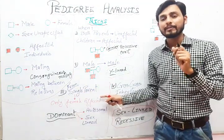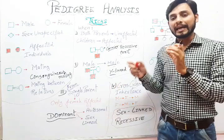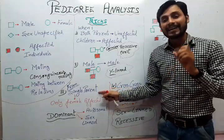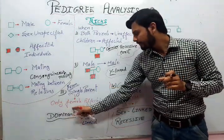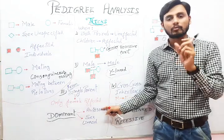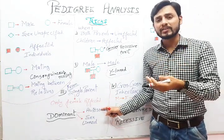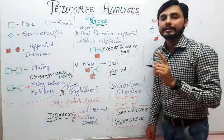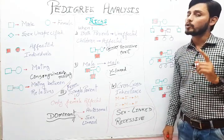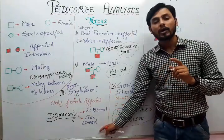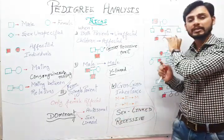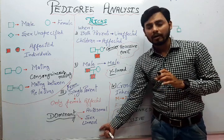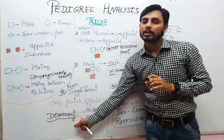The third trick: when either parent is affected and in the next generation only the female child is affected, then the particular trait will be a dominant character. It may be autosomal or sex-linked, but the trait will always be dominant.